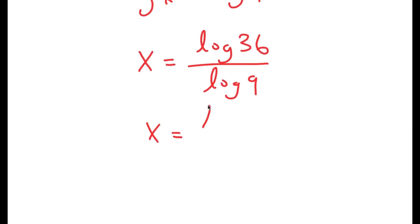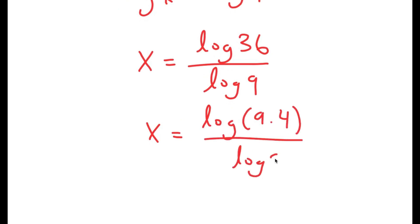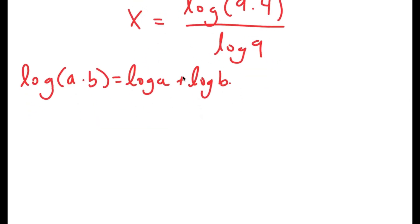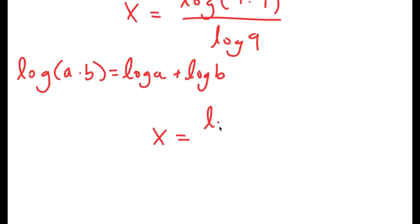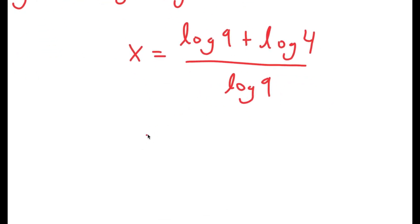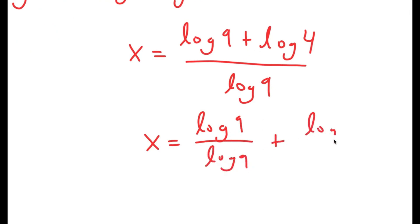Now I'm going to rewrite log 36 as log of 9 times 4. I can use the property that log of a times b is equal to log a plus log b. In this case this becomes log 9 plus log 4, and I have this over log 9.